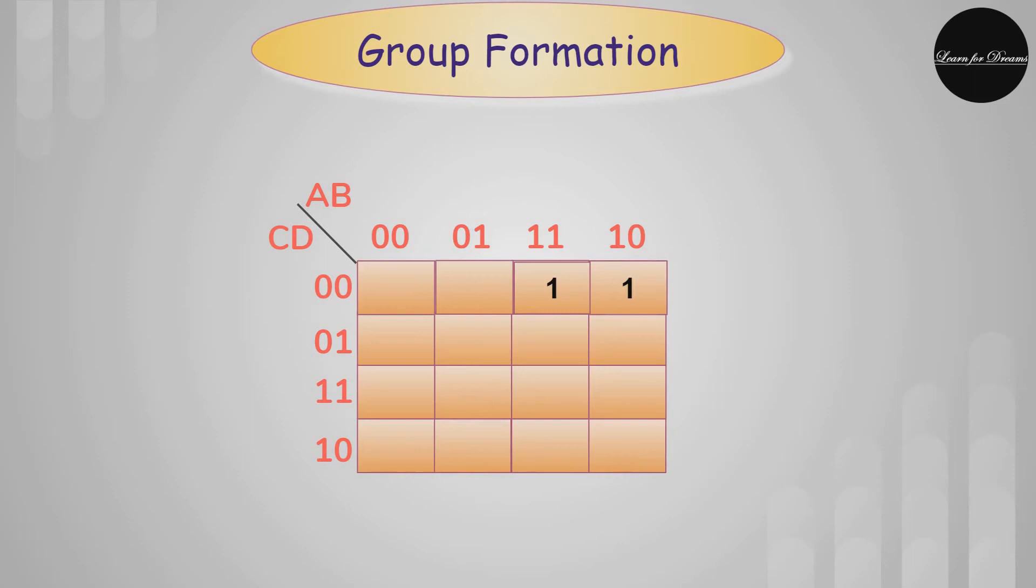When you are making a group of two ones, what is the prime implicant? Is there any combination? So here 00 means C bar D bar is only one element, so no any element will be neglected.